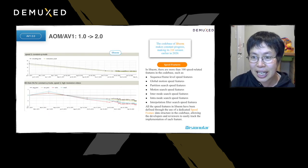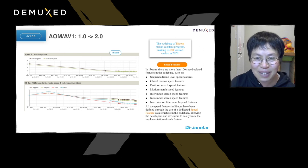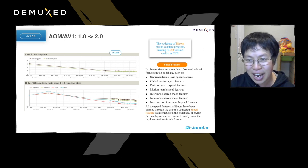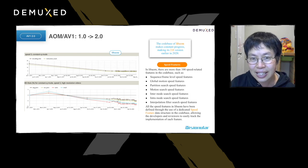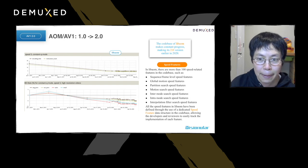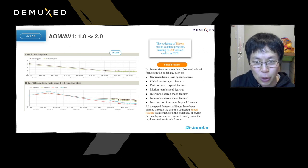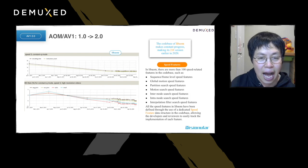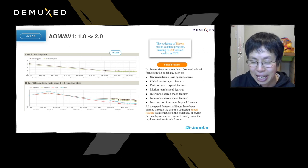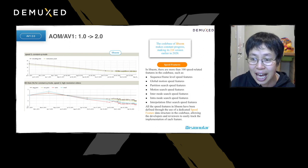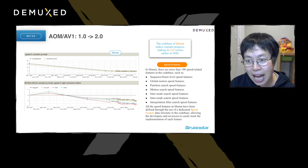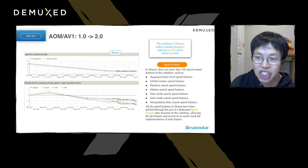Let's look at the LibAOM effort. AV1 has more coding tools, and while the impression is that AV1 is good but slow, there has been quite some progress made. Taking LibAOM as an example, since January 2019 up to mid this year, LibAOM has achieved a speedup of more than 10 times — not just 10%. At the same time, it has also improved its coding efficiency by more than 10%. So it's not only getting better, but also getting a lot faster. There is a dedicated speed feature data structure that makes it easy for developers and reviewers to track the implementation of each single speed feature.